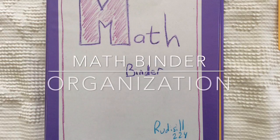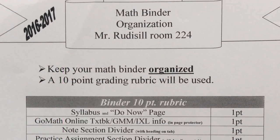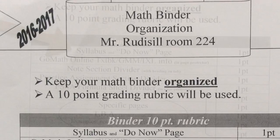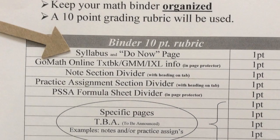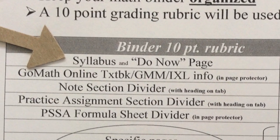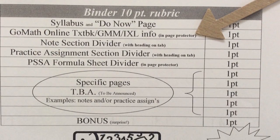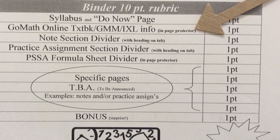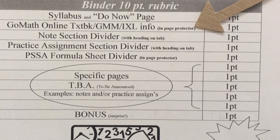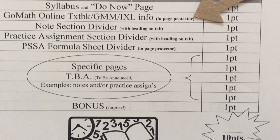This is your official Math Binder Organization video. The first pages in your binder should be your syllabus paper, followed by your Do Now page. Next comes your information for your GoMath online textbook, Get More Math website, and the IXL app, and in a Page Protector.